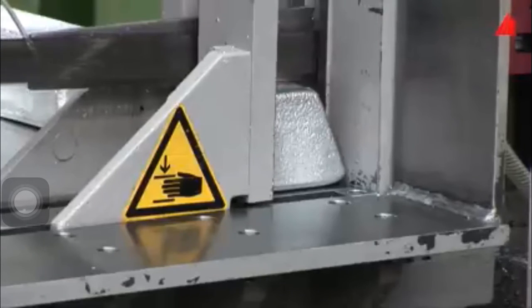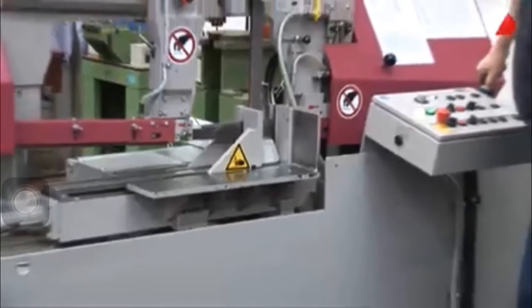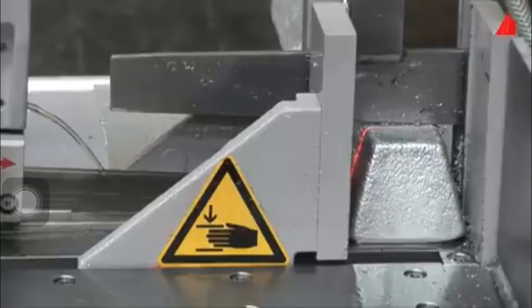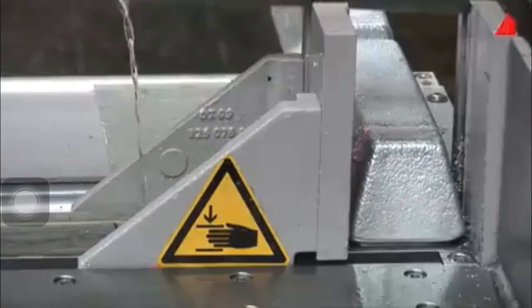Then the bandsaw gently sets onto the block and cuts it slowly under intensive liquid cooling. It is important to keep the material as cool as possible to avoid changes in the material structure. That's it. The ingot has been sectioned.